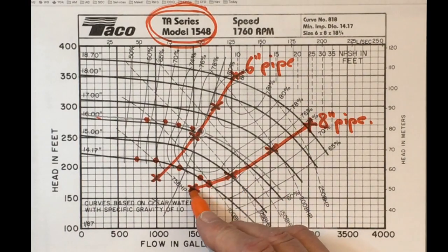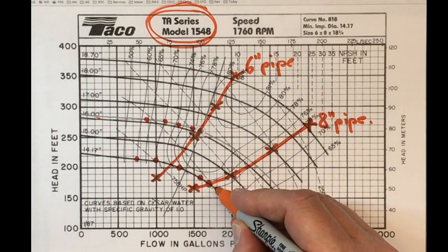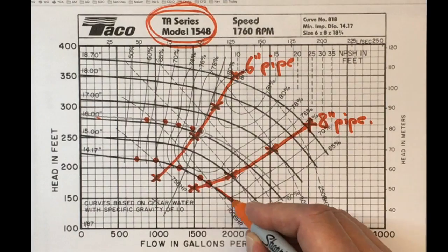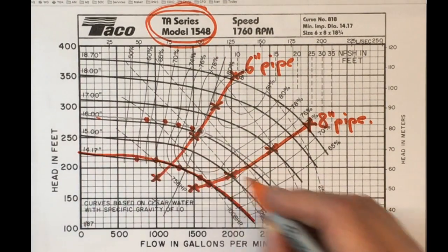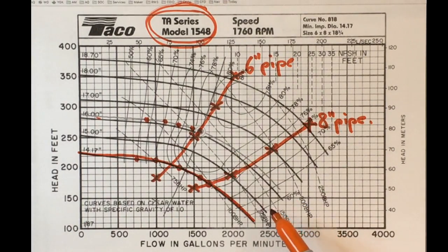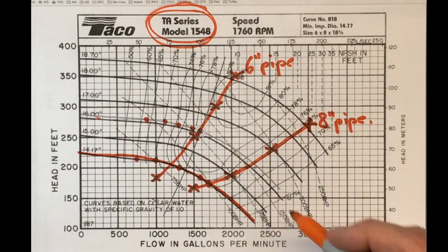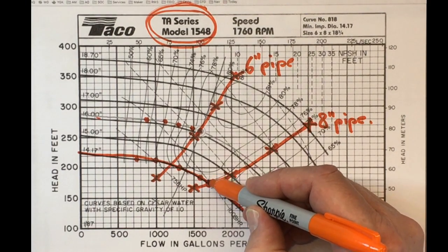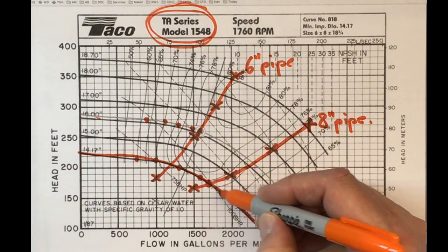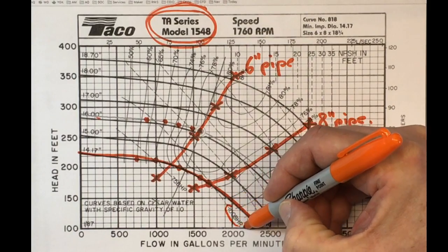And now that we've decided to go with the 8-inch pipe and the 14.17-inch impeller, we need to decide on what motor we're going to put on it. Now our expected operating point here has a motor horsepower requirement just a little bit under 100 horsepower.